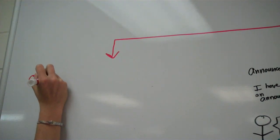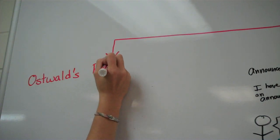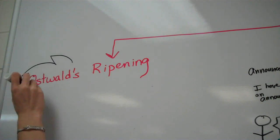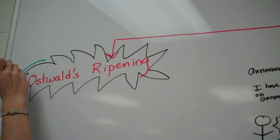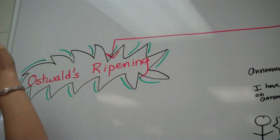Well, let me point you to Oswald's ripening. The process by which small droplets of one fluid, dispersed in another fluid phase, shrink at the expense of the growth of the larger droplets. What?